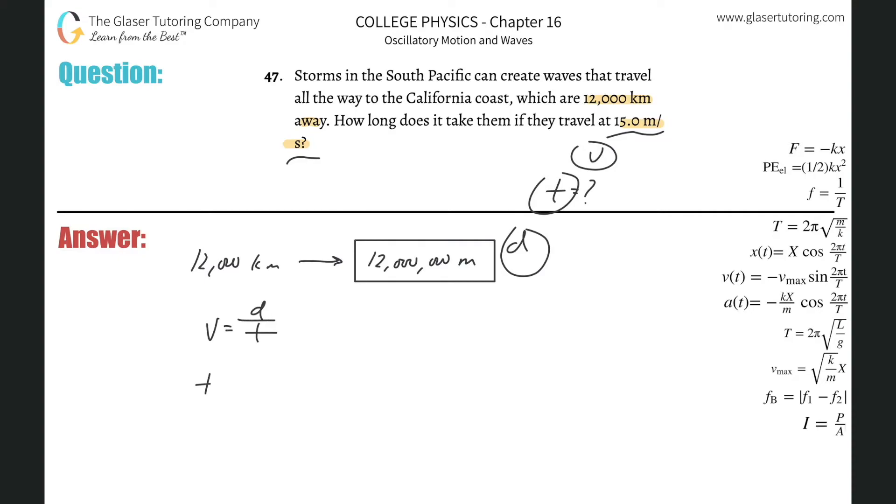Solving for time, it's simply the distance divided by the velocity. So the time here will be equal to the distance of 12 million meters divided by the velocity of 15 meters per second.